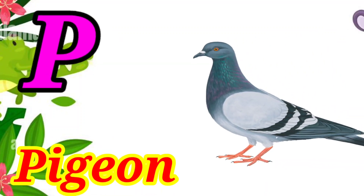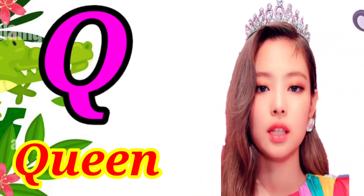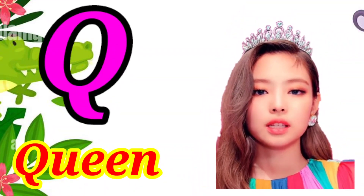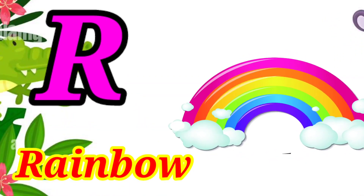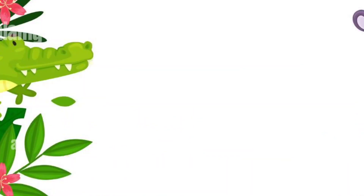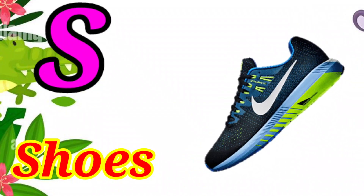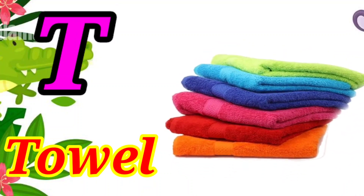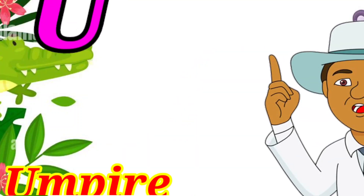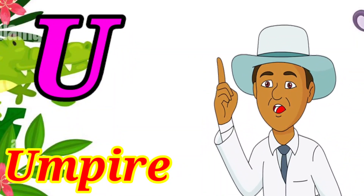P for pigeon. Q for queen. R for rainbow. S for shoes. T for towel. U for lion.